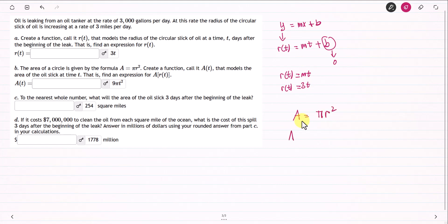We know that the area A equals pi r squared. But now, they want you to find the area given the fact that we have the input of r of t. The input is the function of r, and we got the function of r up here. That is 3t.